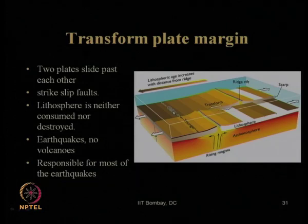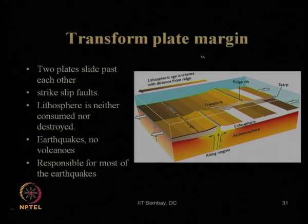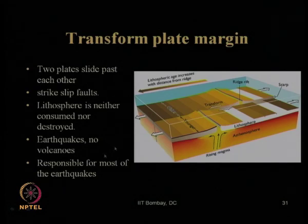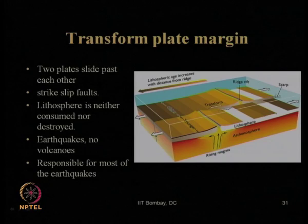Transform plate movement is responsible for most of the earthquakes in the world — more common than those from convergent or divergent movements. For tsunami creation we need vertical movement between plates, which is possible in divergent or convergent type boundary movement but not in transform type. So if an earthquake occurs inside a sea due to transform plate movement, it will not create any tsunami since there is no vertical movement — only lateral shift or lateral displacement between the two plates.